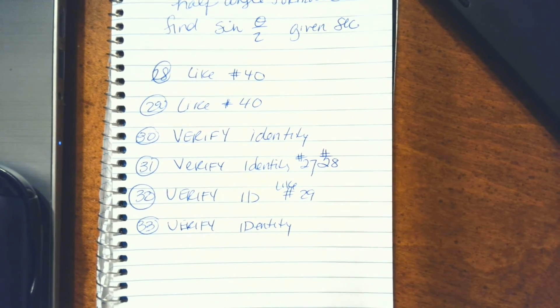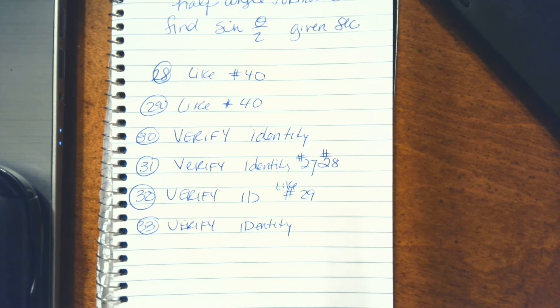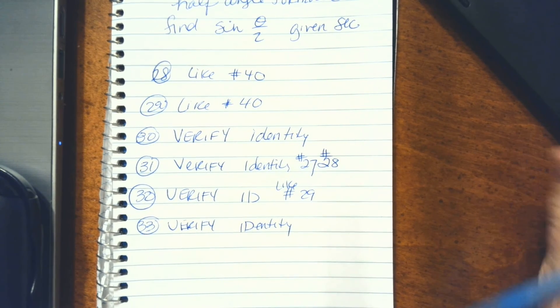There are four verify the identity questions similar to 27, 28, and 29 in the study guide. This version of the final is a lot easier than the paper and pencil version, so I hope that you guys do great.